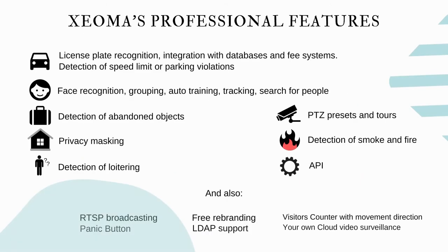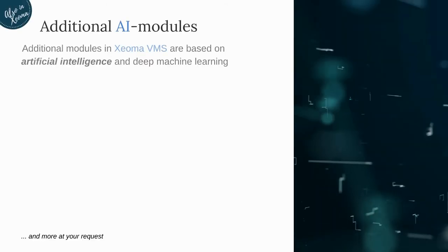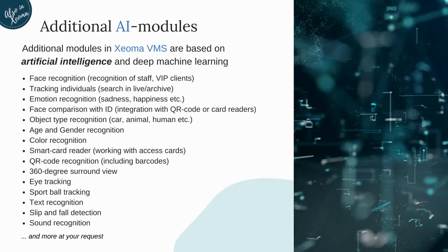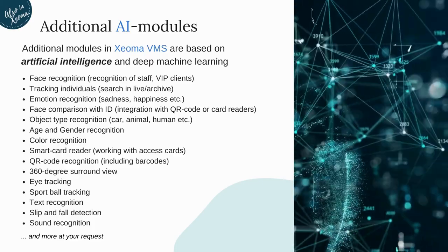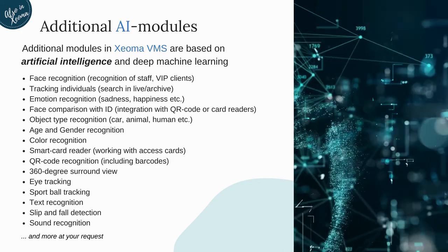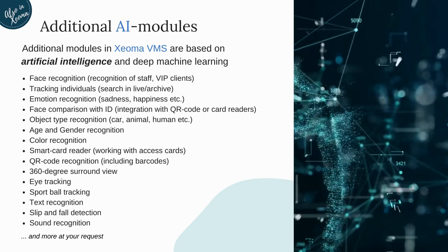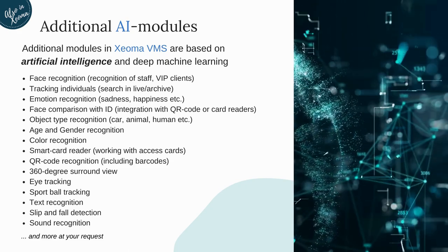Zeoma's professional features range from license plate and face recognition to detection of abandoned objects, loitering, smoke and fire, privacy masking, and more. Moreover, Zeoma video surveillance software has modules based on artificial intelligence, such as face, emotion, object type, age and gender, color recognition, eye tracking, sports ball tracking, and more.